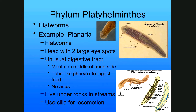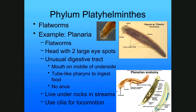The eye spots allow them to see light and dark. Those little ear-flappy looking things are not ears — they're chemosensors that they use to figure out where food is. The pharynx is what they use to eat. In class we cut some liver up, put it in a dish with the planaria, and it slides over the liver and uses the pharynx to basically suck the life out of it.